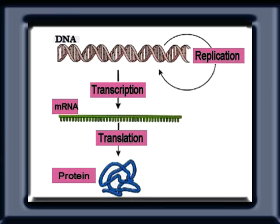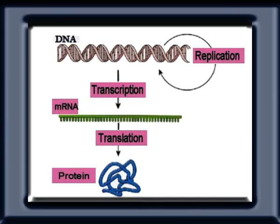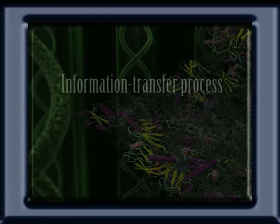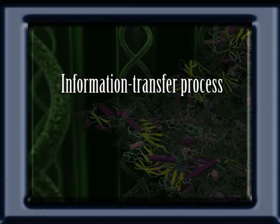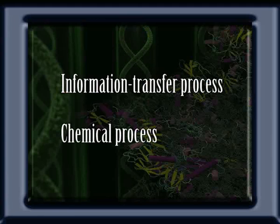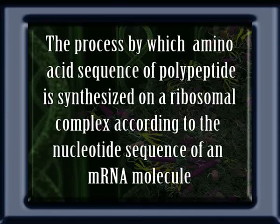The synthesis of RNA, that is mRNA, from a DNA template is called transcription, and the process is catalyzed by an enzyme called RNA polymerase. The next step is the synthesis of polypeptide, that is proteins, from mRNA, which we call translation. Translation includes two types of processes: one, an information transfer process in which the mRNA base sequence determines an amino acid sequence, and two, a chemical process in which the amino acids are linked together.